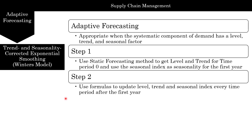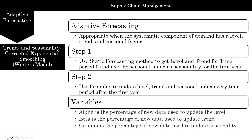We use the formulas for level, trend, and seasonality to keep updating those values. We have three smoothing parameters: alpha, beta, and now gamma, where gamma is the percentage of new data used to update seasonality.